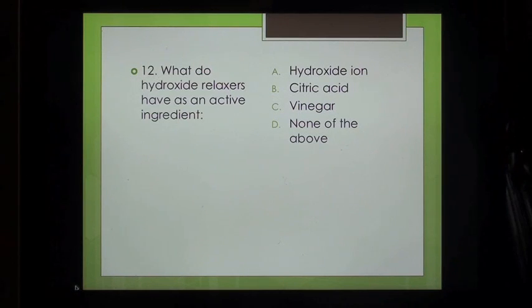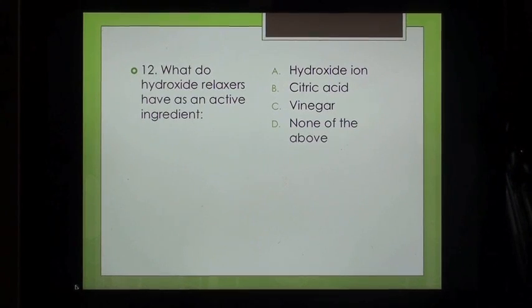Question 12: What do hydroxide relaxers have as an active ingredient? A. Hydroxide ion, B. Citric acid, C. Vinegar, D. None of the above.